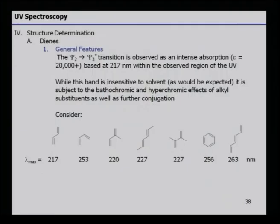Looking at different types of dienes: cis dienes will be at a higher lambda max, while dienes with more alkyl groups or extended conjugation will gradually show a change. Transitions observed in intense absorption (above 20,000 molar absorptivity) are at 217 nm. While this band is insensitive to solvents, it is subject to bathochromic and hyperchromic effects by alkyl substituents and further conjugation — with values increasing gradually from 217 to 253 to 220 to 227 nm and so forth.